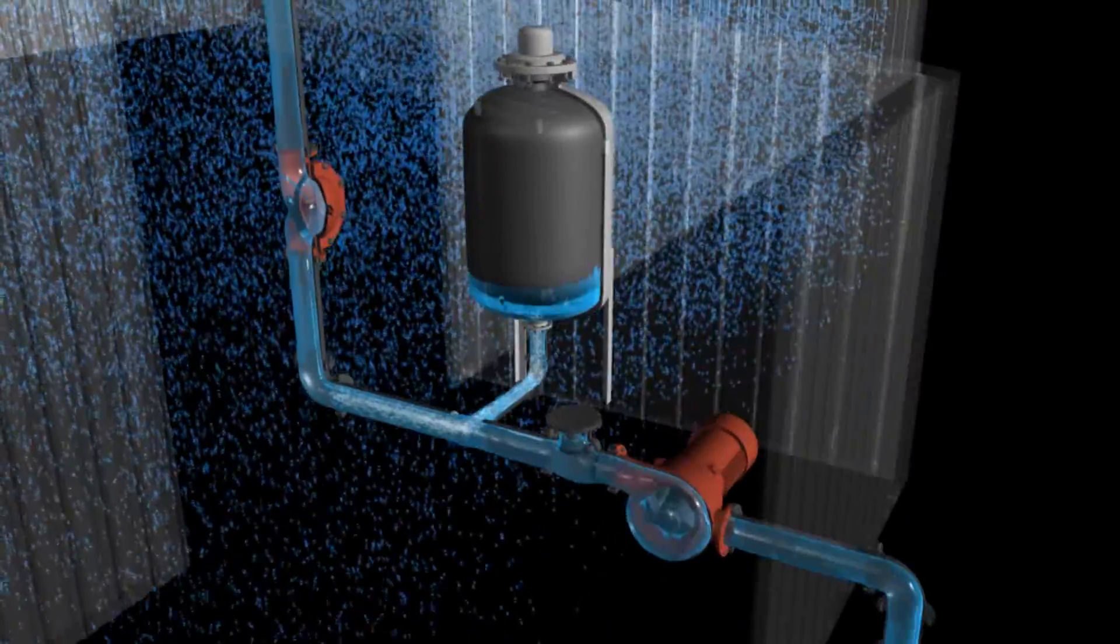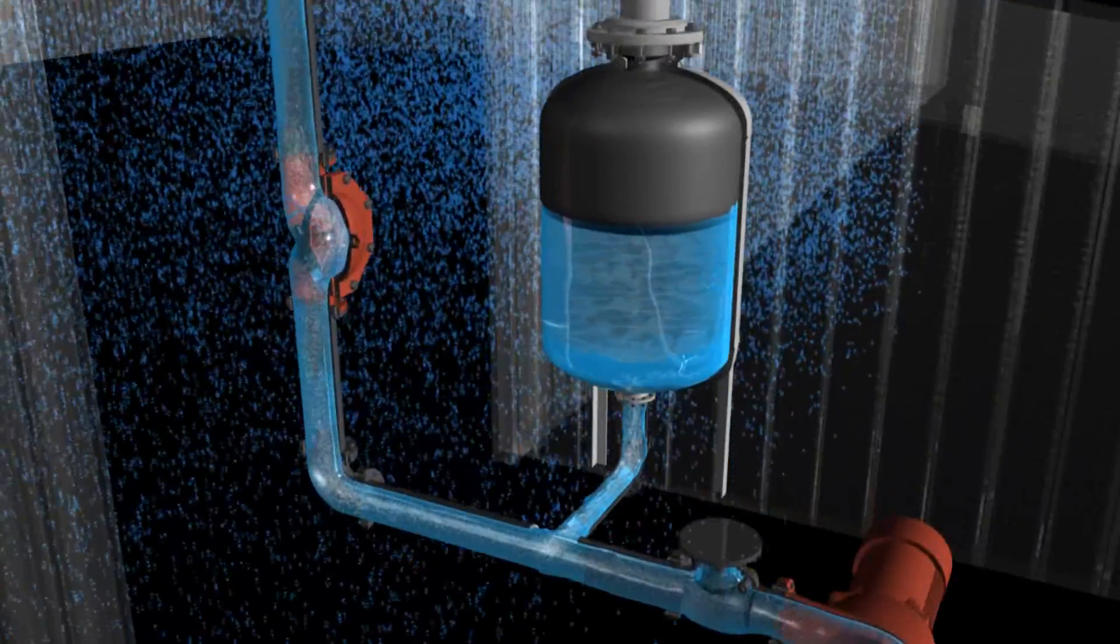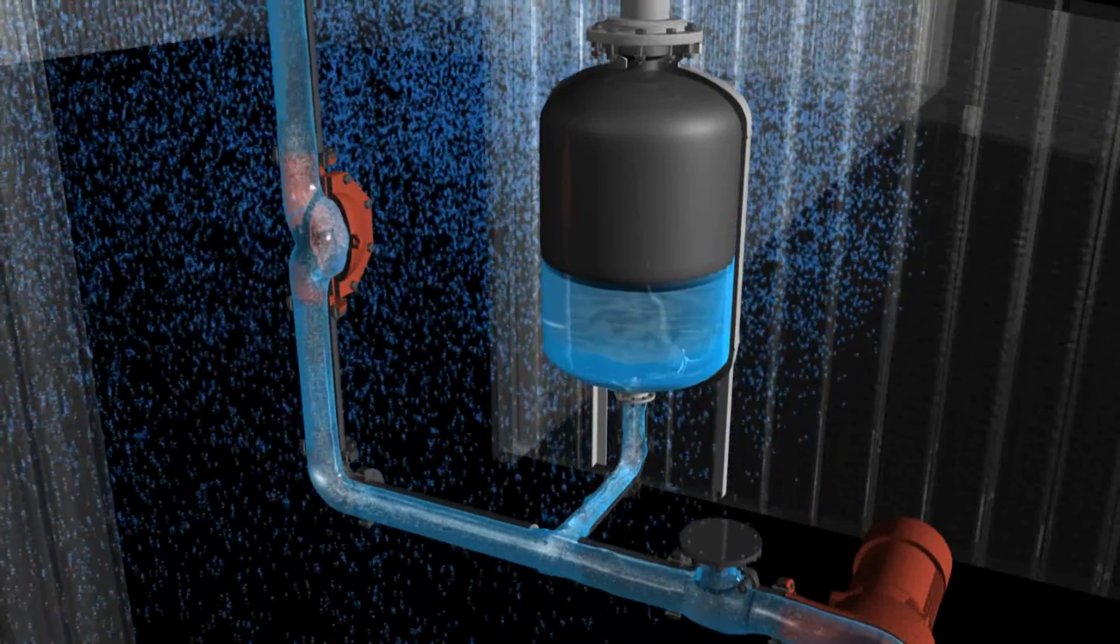When the pump starts to provide more pressure, water is directed back into the bladder surge tank to prevent a surge condition from the pump startup.